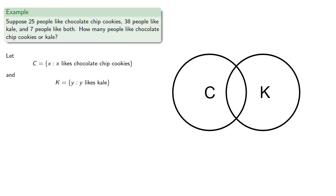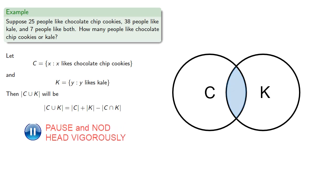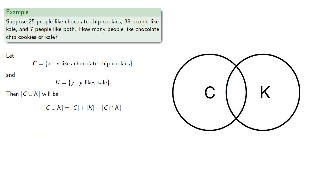Then the number of people who like either chocolate chip cookies or kale will be the number who like chocolate chip cookies plus the number who like kale. But since this counts the people in the intersection twice, we'll need to subtract out the intersection. So filling in our numbers, we get the answer.